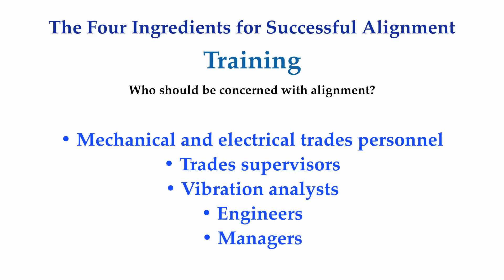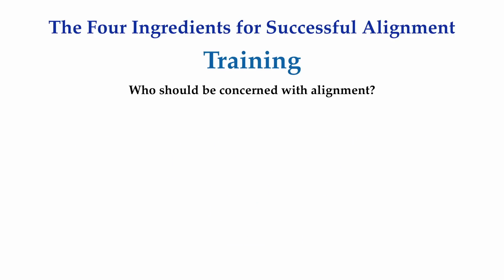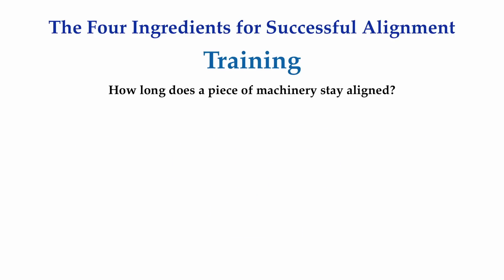The managers have the responsibility of providing the funding and the time for the required tools and training, and the inspirational leadership to convey the message that accurate alignment is financially beneficial to the company. A common misconception is that once you align a piece of rotating machinery, it stays aligned forever. If you did annual alignment checks, you might be surprised to learn how many drive systems drift out of alignment.